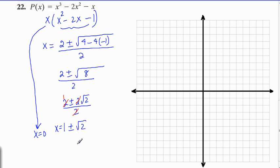1 plus radical 2, radical 2 is about 1.4. So, 1 plus radical 2 is about 2.4, and 1 minus radical 2 is negative 0.4. So, here is 0. 1 plus radical 2 is about 2.4, as we said, and then negative 0.4 is over here. That's 1 minus radical 2.